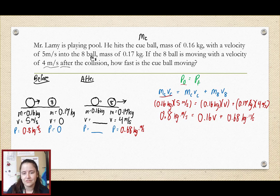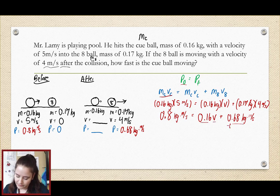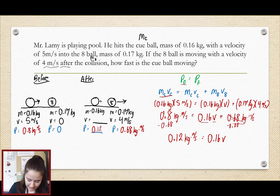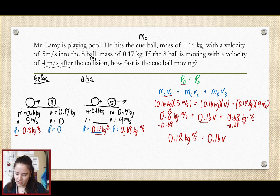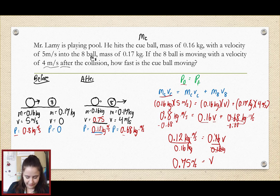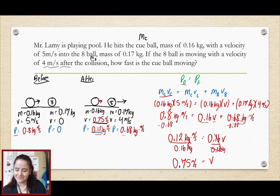Now it becomes an algebra problem. We want to isolate V, and right now it's being added to 0.68. So we subtract 0.68 from both sides and get 0.12 kilogram·meters per second equals 0.16 times V. Subtracting those momentums gives us the momentum of the cue ball after the collision, because they have to add up to the total momentum before. Then to solve for velocity, we divide both sides by 0.16 kilograms, and we get that the velocity is 0.75 meters per second. It is positive, so it will be going in the positive direction.